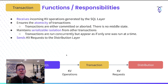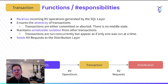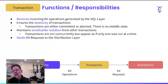So what does the transaction layer do in CockroachDB? It receives incoming KB operations generated by the SQL layer, and it also ensures the atomicity of transactions. All transactions in CockroachDB are ACID compliant — they are either committed or aborted, and there's no middle state.